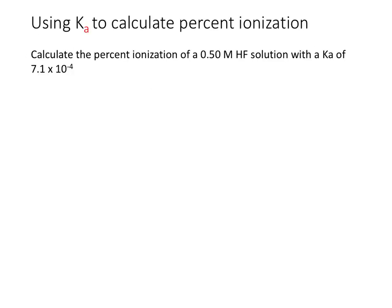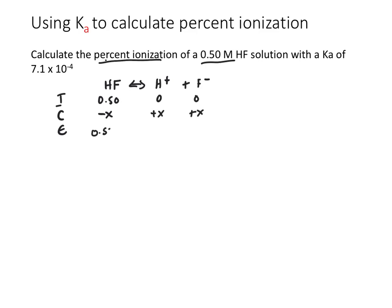Let's use Ka to calculate the percent ionization of a weak acid. We want to calculate the percent ionization of a 0.50 M HF solution with a Ka of 7.1 × 10⁻⁴. HF ionizes into H⁺ and F⁻ in solution. Setting up the ICE table: the initial concentration of HF is 0.50 M, and the initial concentrations of H⁺ and F⁻ are both 0. HF decreases by X, while H⁺ and F⁻ each increase by X, giving us the equilibrium concentrations.